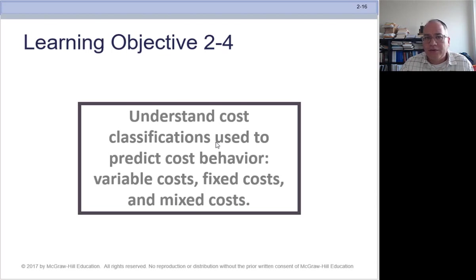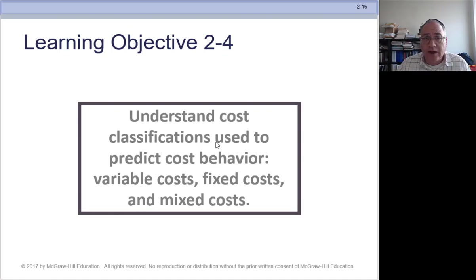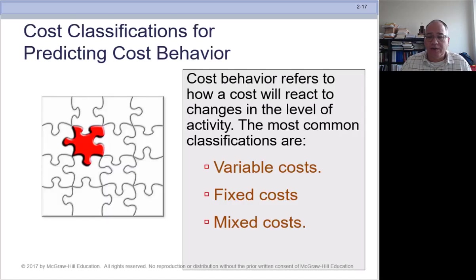Learning Objective 2-4: cost behavior. What we mean by cost behavior is understanding what causes costs to increase or decrease, and having an idea of when costs change and when they stay the same. The three basic classifications are variable costs, fixed costs, and mixed costs.